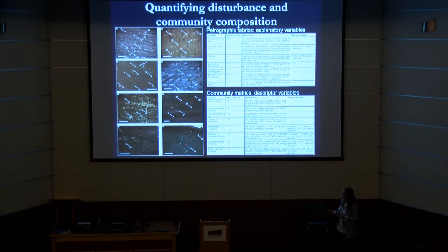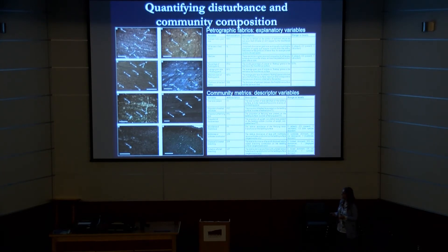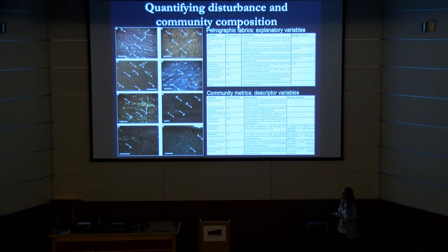Where the fabrics are consistent in the hemipelagite, we can use that as a proxy for environmental conditions - categorising by the amount of coarse sediment, its grain size, whether it's delivered laterally or settling through the water column, and various other parameters.